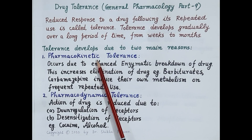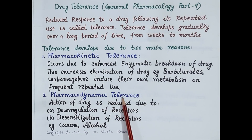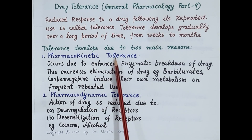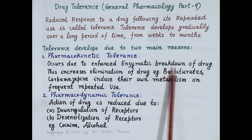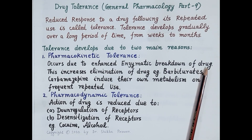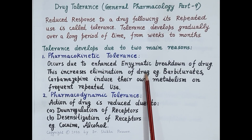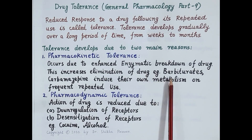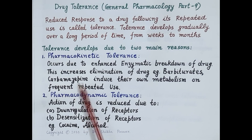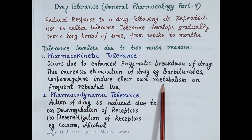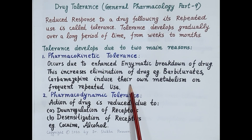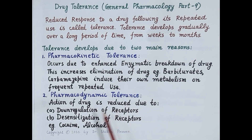Tolerance develops due to two main reasons: pharmacokinetic reasons and pharmacodynamic reasons. Pharmacokinetic tolerance occurs due to enhanced enzymatic breakdown of the drug on frequent repeated consumption. This enhanced breakdown increases elimination of the drug, reducing its concentration at the site of action, resulting in tolerance. For example, drugs like barbiturates and carbamazepine induce their own metabolism on frequent repeated use, and this results in tolerance.